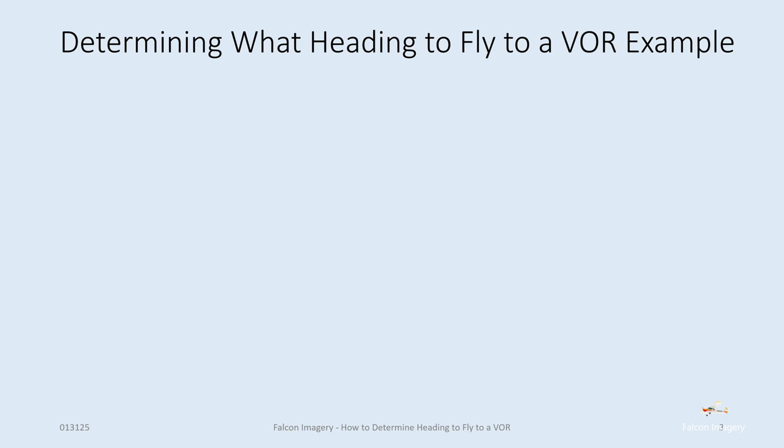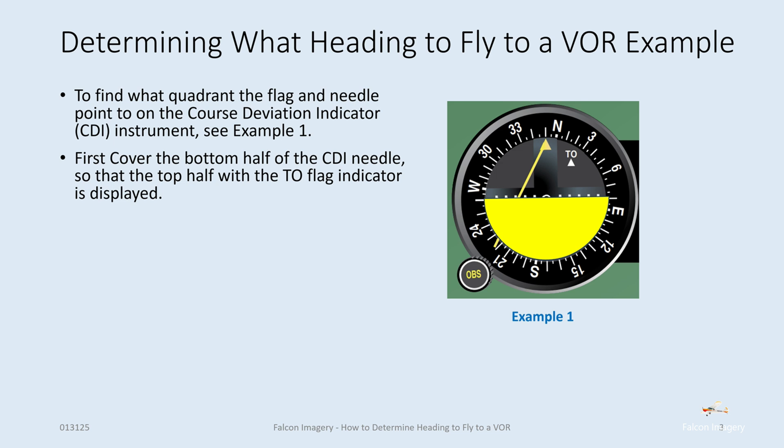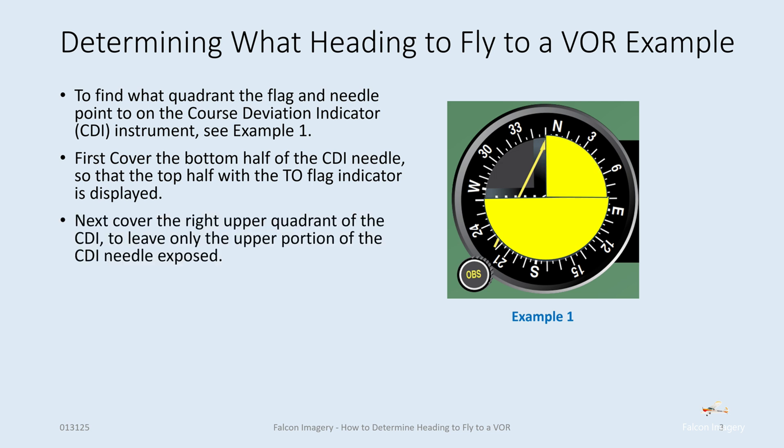We'll go through an example here. To find what quadrant the flag and needle point to on the course deviation indicator, see example 1. We've got a flag off to our left and we see a to indication. First, we're going to cover the bottom half of the CDI needle so that the top half with the to flag indicator is displayed — so we're going to be flying to the VOR. Next, cover the right upper quadrant of the CDI to leave only the upper portion of the CDI needle exposed, which is off to the left or northwest.